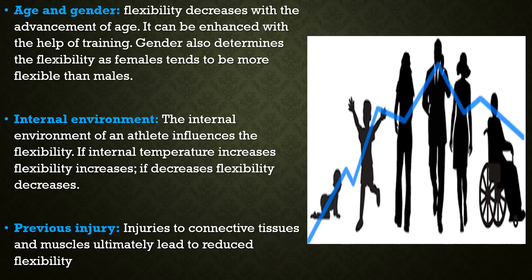Next is internal environment. The internal environment of the athlete influences flexibility. For example, 10 minutes in a warm bath increases body temperature and flexibility, whereas 10 minutes spent outside in 10 degrees Celsius reduces body temperature and flexibility.